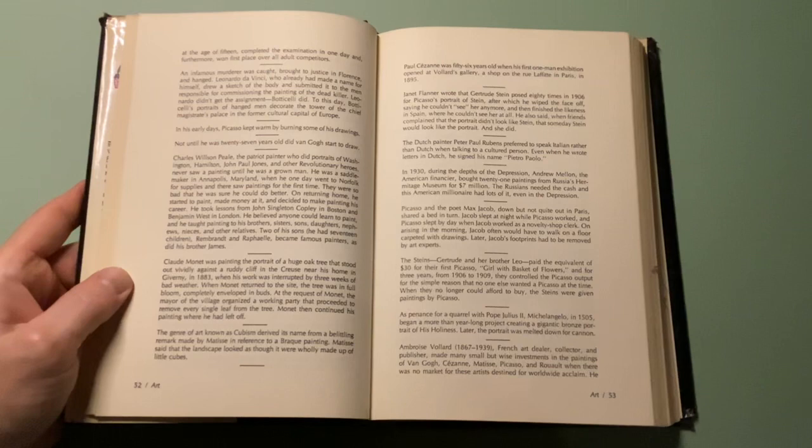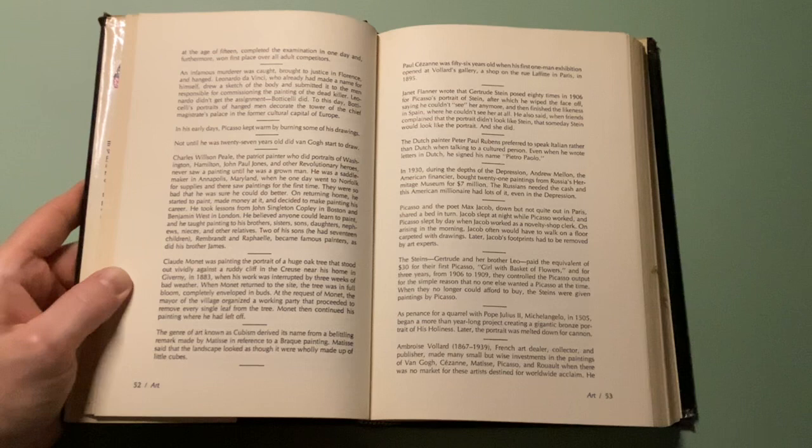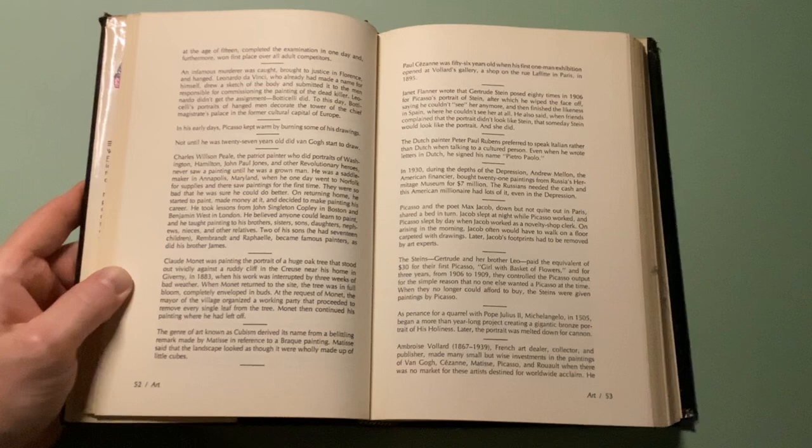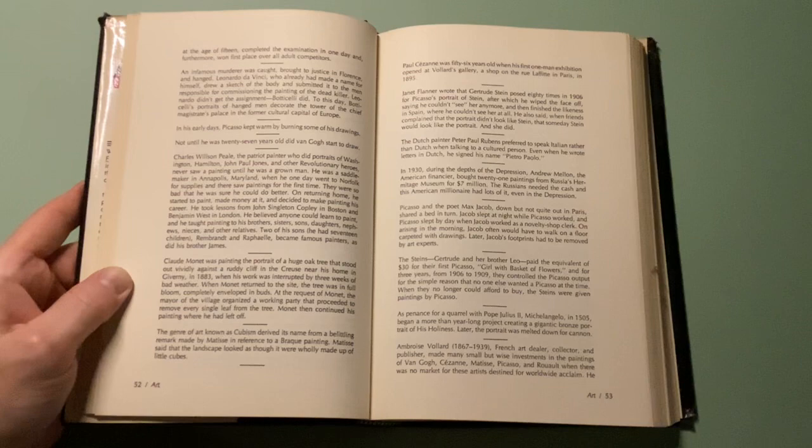The name of the genre of art known as Cubism derived its name from a belittling remark made by Matisse in reference to a Braque painting. Matisse said that the landscape looked as though it were wholly made up of little cubes.